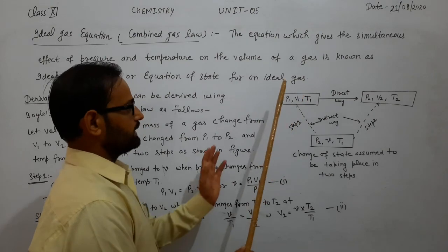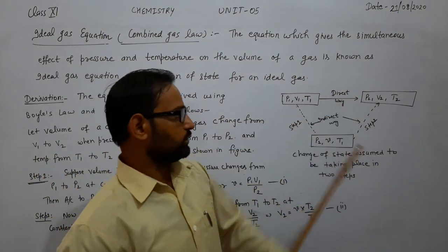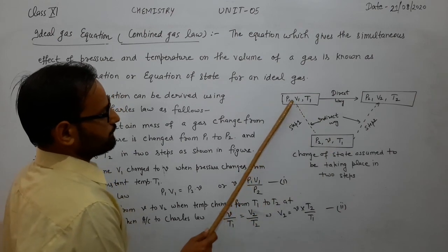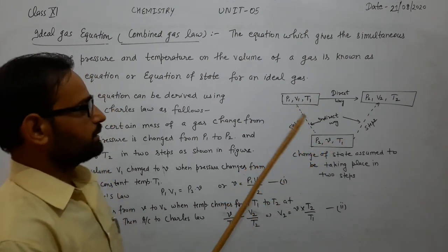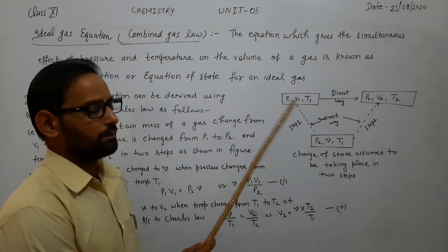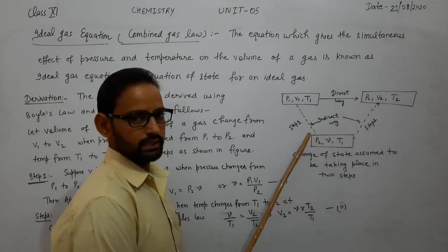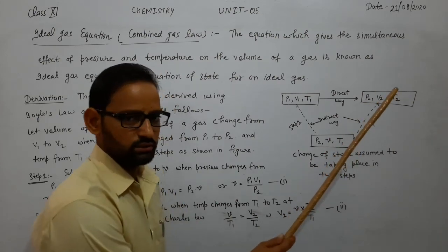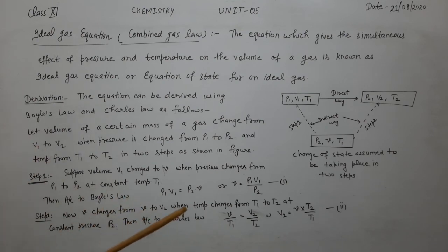Consider initial conditions with pressure P1, volume V1, and temperature T1, changed to final conditions P2, V2, and T2. This change can take place in two steps. In step 1, P1 is changed to P2 while temperature T1 remains constant — this follows Boyle's law. In step 2, temperature changes from T1 to T2 at constant pressure P2 — this follows Charles's law.